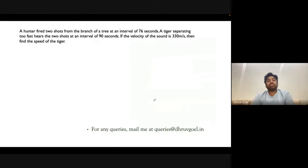I have taken a question where there is a hunter and a tiger. A hunter fires two shots from a branch at an interval of 76 seconds. The tiger, separating too fast, hears the two shots at an interval of 90 seconds. If the velocity of sound is 330 meters per second, find the speed of the tiger. That's what the question is.